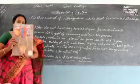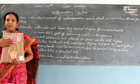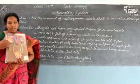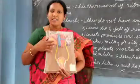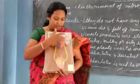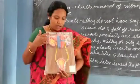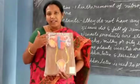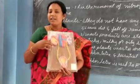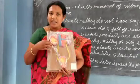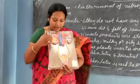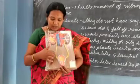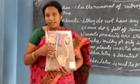This is the excretory system in human beings. The organ used for excretion in human beings is the kidney. We have a pair of kidneys on the right and the left side. They are located in the abdominal region on either side of the backbone, and the kidney is connected with the tube which is called the ureter.